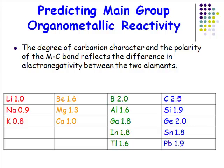Two important factors explain the reactivity difference. First: which is the strongest Lewis acid — trimethylaluminium or tetramethylsilane? Trimethylaluminium is the stronger Lewis acid because it has a vacant orbital. An electron-deficient organometallic compound will be more reactive than an electron-precise compound with an octet of electrons. Having a Lewis acidic, electron-deficient organometallic is one important factor in predicting reactivity.